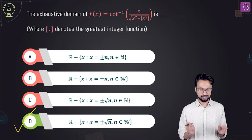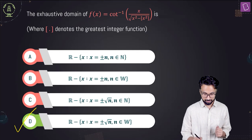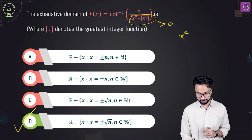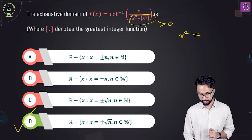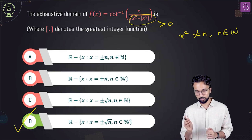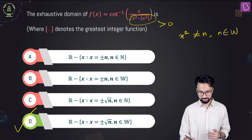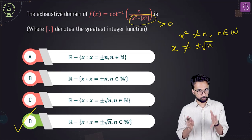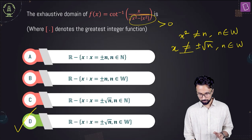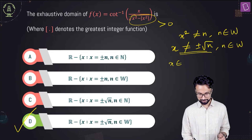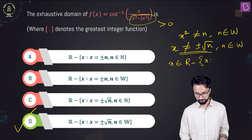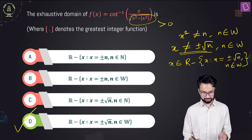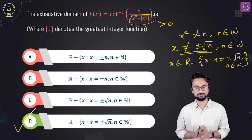The final answer is option D. To summarize: we ensured the denominator expression was greater than 0, which requires x squared to not be an integer — that is, x squared not equal to n for any whole number n. Taking square roots, x is not equal to plus or minus root n, giving the domain as all reals minus that set.